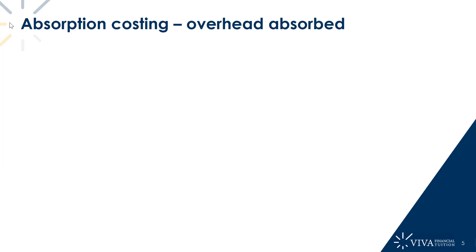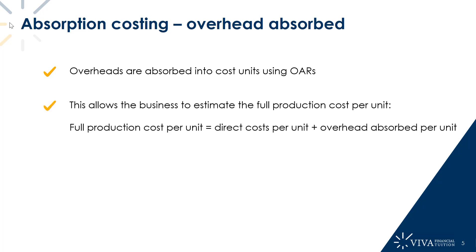Once we've calculated overhead absorption rates, we can then go through the process of absorbing overheads — building up an estimated cost of making our products. Overheads are absorbed into cost units, which are just products produced, using the overhead absorption rates. What we're trying to do here is estimate the full production cost of our products. The full production cost will be made up of the direct cost per unit — such as direct materials, direct labour, and any direct expenses — plus the overhead absorbed per unit, calculated using our overhead absorption rates.